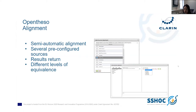Concepts can also be aligned with other thesauri using the semi-automatic alignment feature. You have to choose a source; there are several sources already pre-configured such as Wikidata, GeoNames, or the Getty AAT. The alignment module returns several proposals. You have to choose the right alignment based on several levels of equivalence which correspond to the SKOS match properties. Once validated, you get additional enrichment of notes, translations, and images in addition to the alignment. The automatic alignment also allows you to retrieve GPS coordinates.